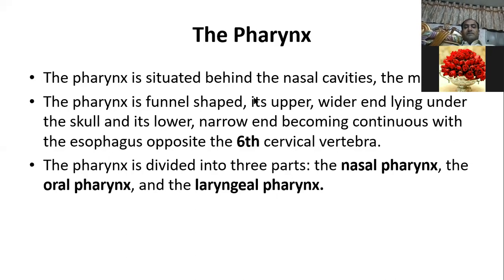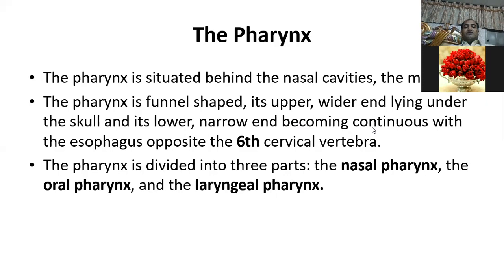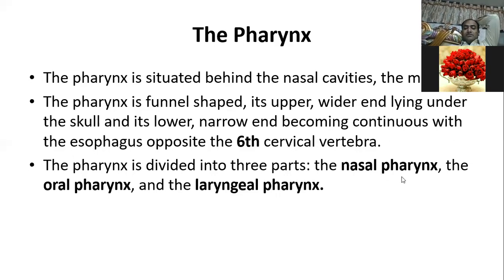In the pharynx, it takes six certain parts. The pharynx continues and has three openings, giving us three parts: the nasal pharynx, the oral pharynx, and the laryngeal pharynx. The larynx makes these three separate divisions.